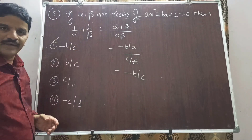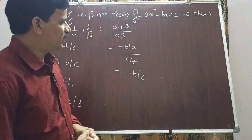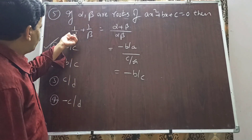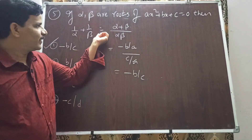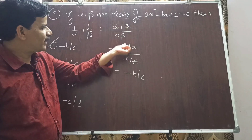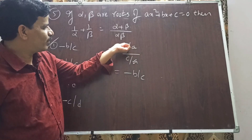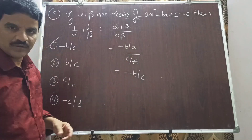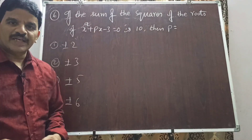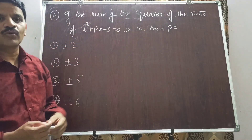This type of question is asked repeatedly in POLYCET and is very important. So 1/alpha + 1/beta = (alpha + beta)/(alpha·beta) = (-b/a)/(c/a) = -b/c. Option 1 is the right answer.